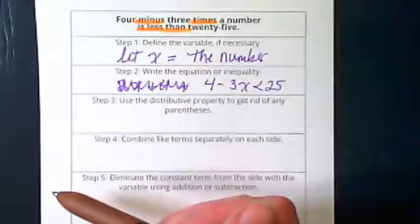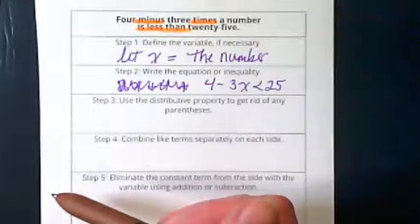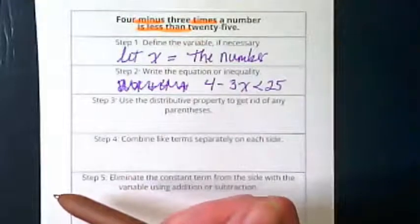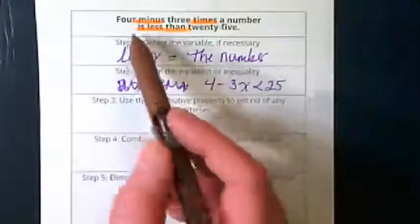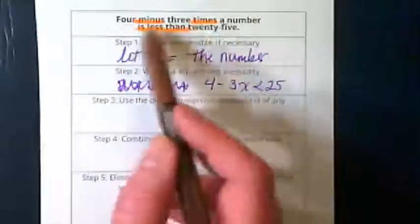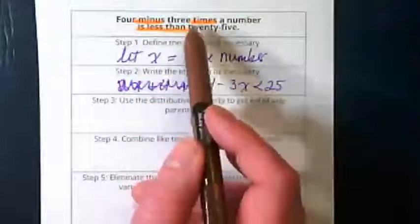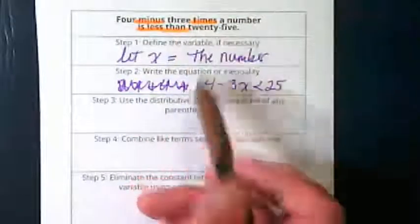Honestly, I found this one the easiest to write. This was way deep in the packet, because I feel like we've done all the hard brain work already. 4 minus 3x. Why is it 3x? Because it's 3 times the number.